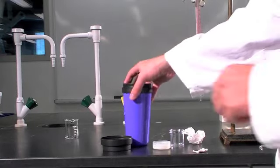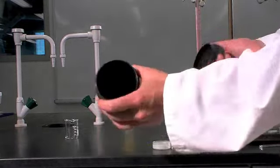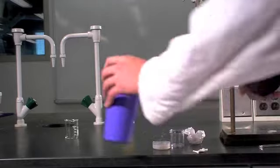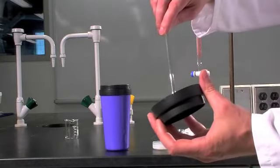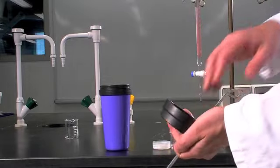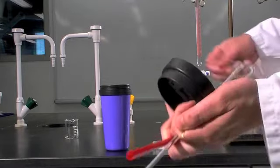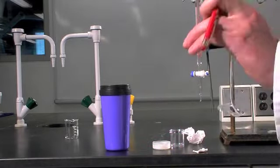The setup of the coffee cup calorimeter is pretty straightforward. You have your insulated cup, you've got your lid, you just put your stir rod through the large hole and your thermometer is going to be going through the small hole.